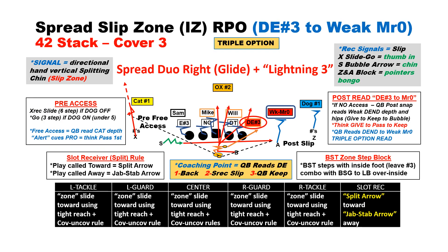Another inside RPO for a quarterback that isn't necessarily a dual-threat running quarterback is to use slip zone inside zone. The S or A to the play side does glide motion from wide alignment into a wing. Then we simply run our inside zone and triple option read this — give, reading the defensive end, to now throw the slip screen to the S, what we call slip arrow. Last, if that's covered, the quarterback runs.